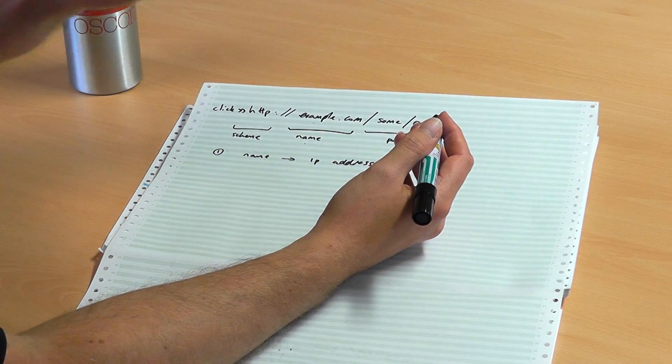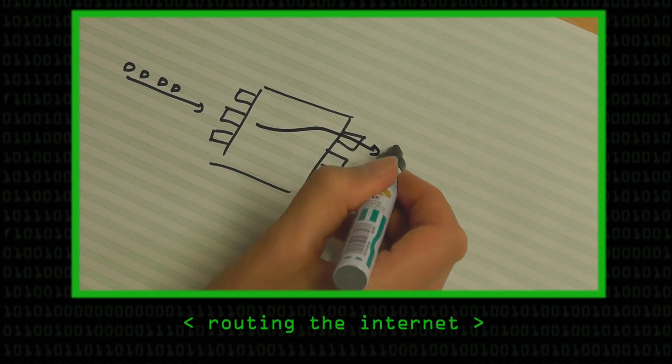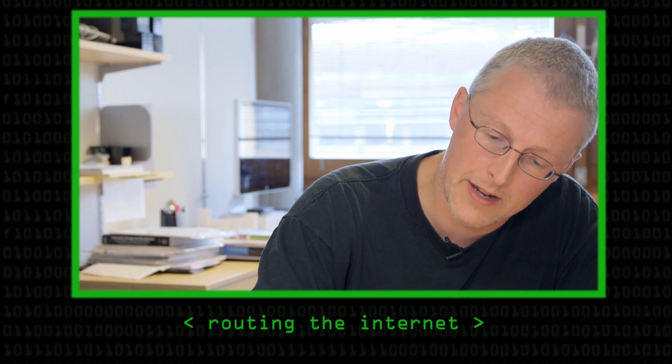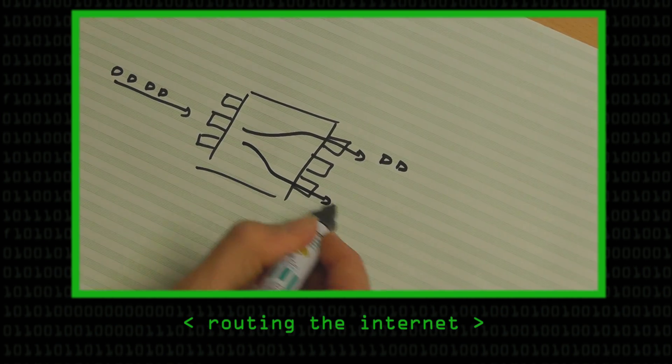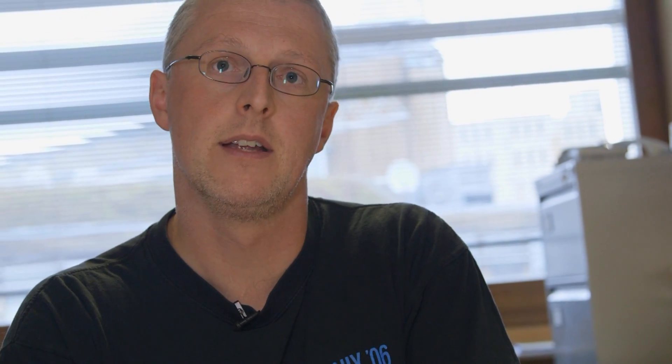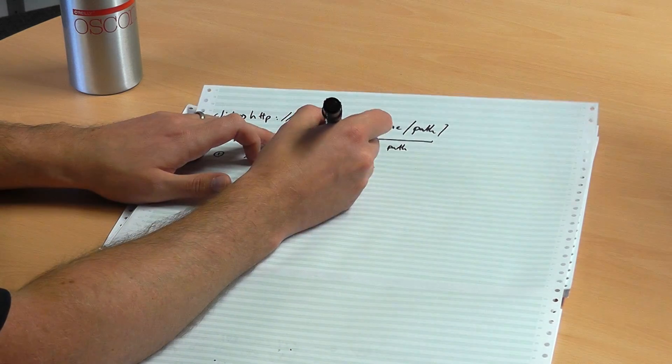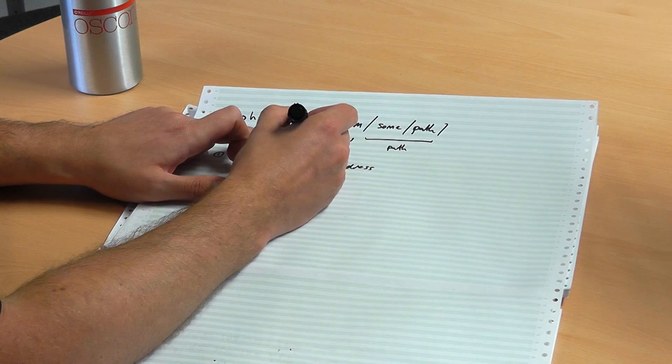Because this is the internet, things don't have names — they've got IP addresses. So it needs to translate the name, in this case example.com, into some IP address so it can get data to the destination. All those packets are being routed through the network based on their destination address, so you've got to put a destination address in the packet — the IP address that corresponds to example.com. So you look up the name and you get the IP address.